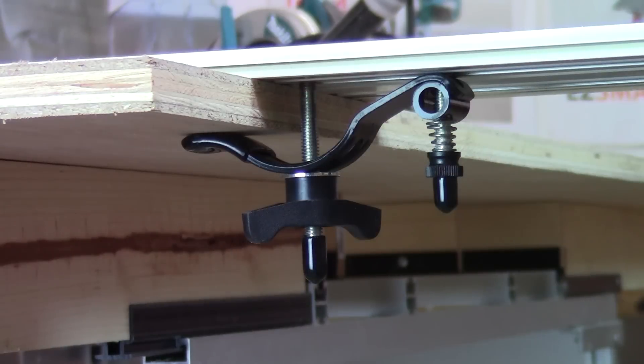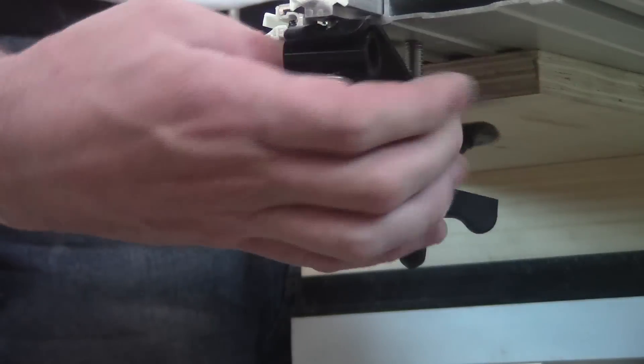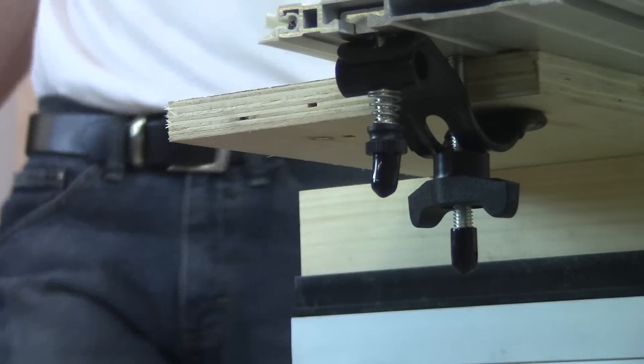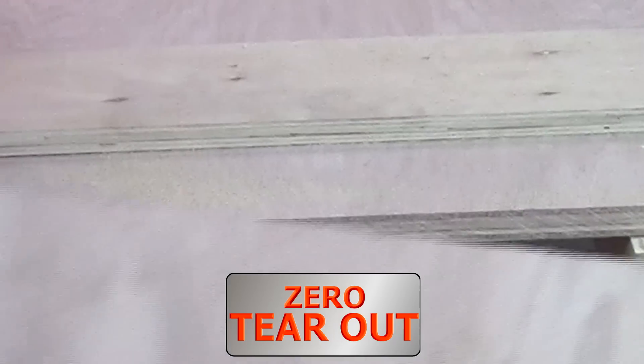And since the wood is captive under the track, there is no danger of kickback. The EZ Smart Track Saw System includes two EZ Smart clamps capable of securing even the smallest boards under the track. The patent-pending anti-chip inserts provide zero clearance on either side of the blade for astoundingly clean cuts.